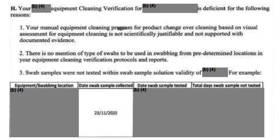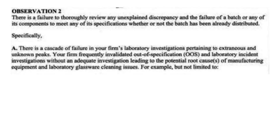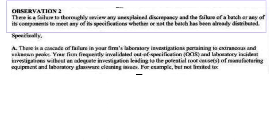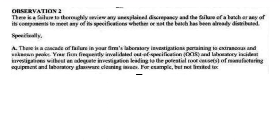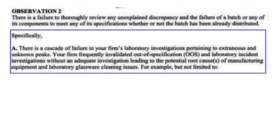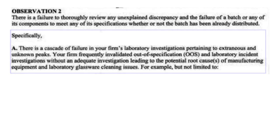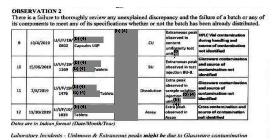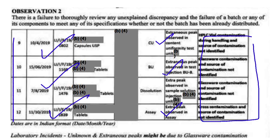Now let us understand observation number two. The title is: There was a failure to thoroughly review any unexplained discrepancy. Under this observation, auditors stated there was a cascade failure in the firm's laboratory investigations related to extraneous peaks and unknown peaks — the firm frequently invalidated OOS and laboratory incident investigations without any root cause identification. Around 19 examples related to extraneous peak incidents are mentioned in this Form 483, and for all of them, root cause was concluded as glassware contamination, but the further source of contamination was not identified.